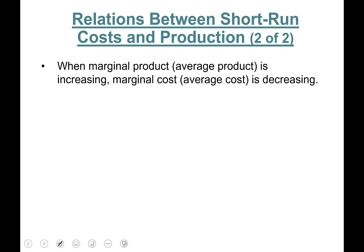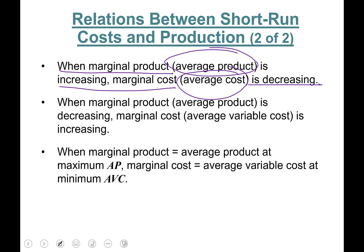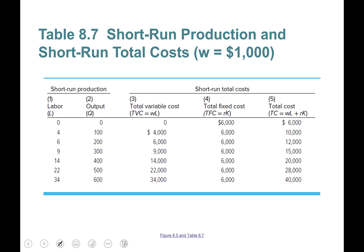When marginal product is increasing, marginal cost is decreasing — same thing. When average product is increasing, average variable cost is decreasing, and vice versa. When marginal product and average product are equal to each other, we're at the maximum of average product, and marginal cost and average variable cost are equal to each other at the minimum point of average variable cost.